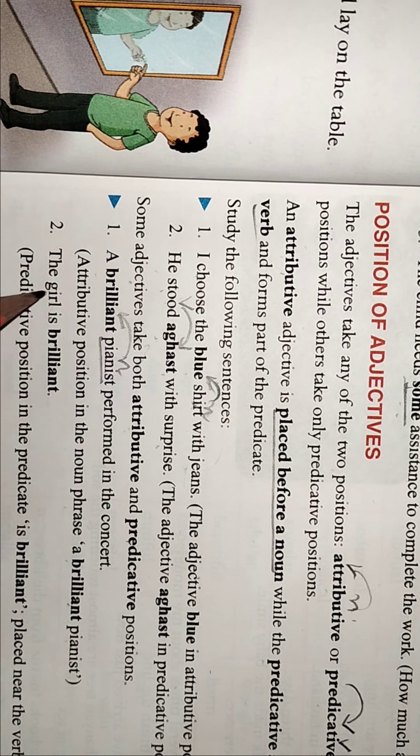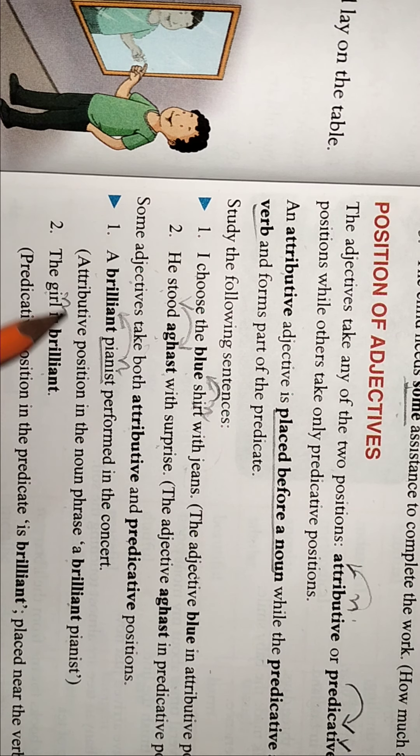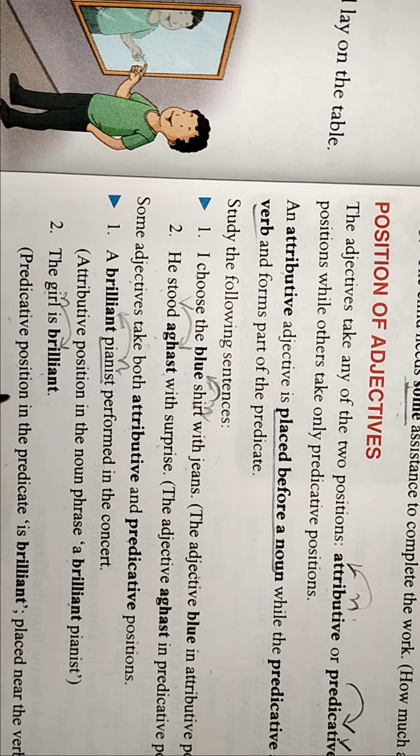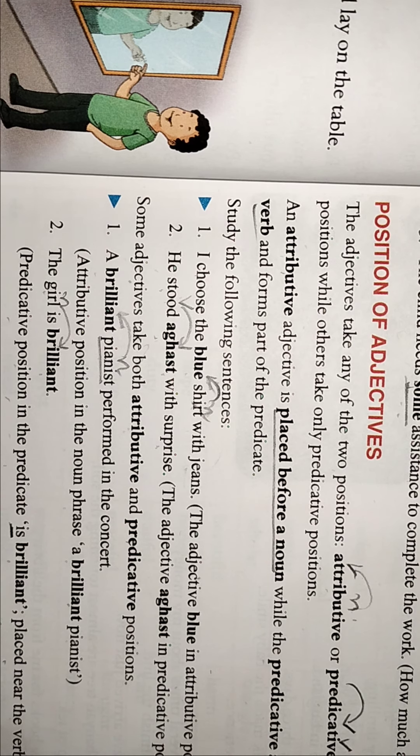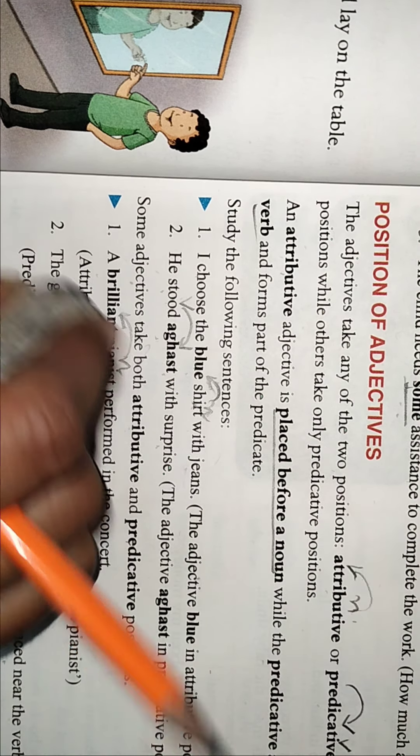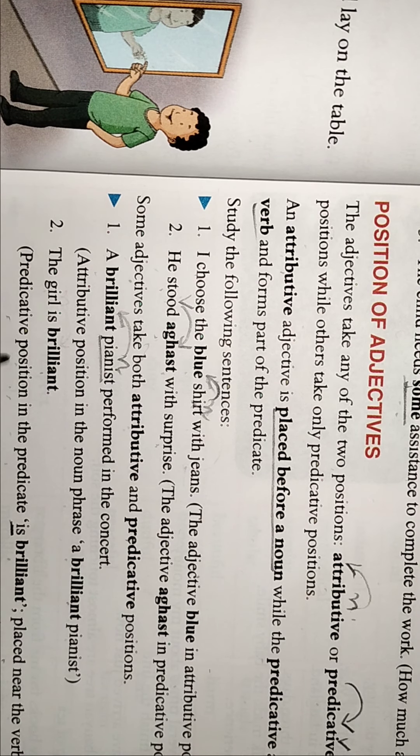Right, the girl is brilliant. Noun is here and it is placed here, the predicative position in predicate. 'Is brilliant' placed near the verb. Yes, following the subject here the girl is a noun, but again predicative position may be in predicate.